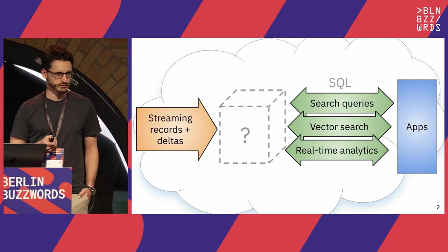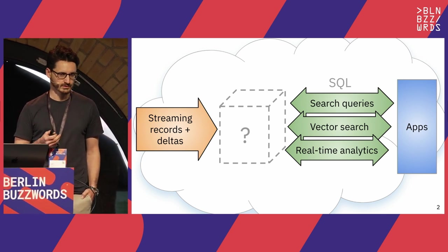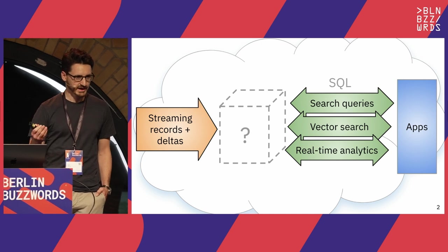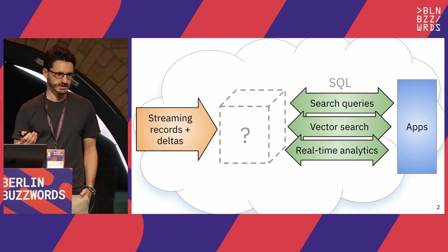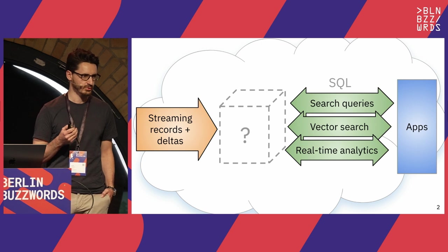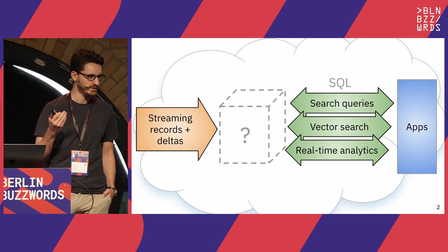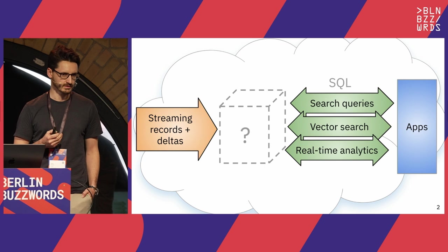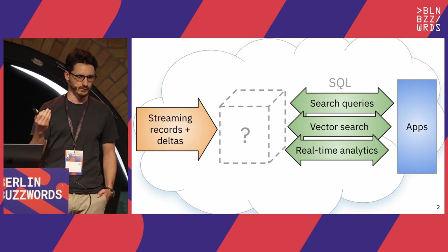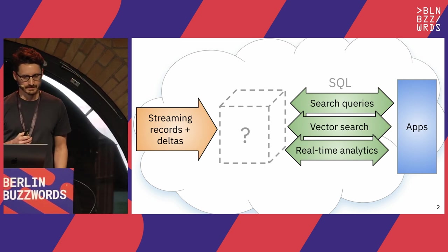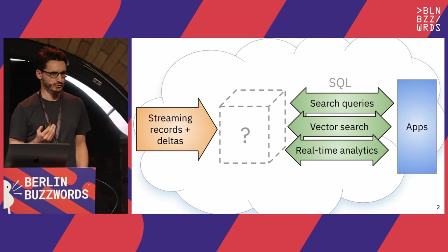Queries could also be vector search queries, so we'll need some sort of approximate nearest neighbor index. And they could also be real-time analytics queries with a lot of joins. The consumer of our system is an application, which puts constraints on our design — namely, you want query latency to be very low, and you also need to support very high QPS, or a high number of concurrent queries at the same time.